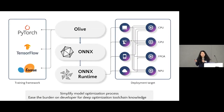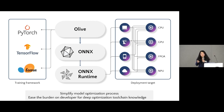Olive is a toolchain specifically designed for hardware-aware model optimization. It eliminates the need for developers to be experts in different optimization tools and simplifies the complex optimization process, handling it on your behalf.